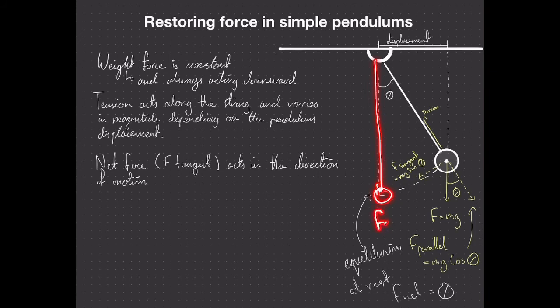and fg is acting downward with tension opposing that, the forces are balanced. We have no displacement, therefore our theta is zero, and there is no restoring force then acting on our pendulum.